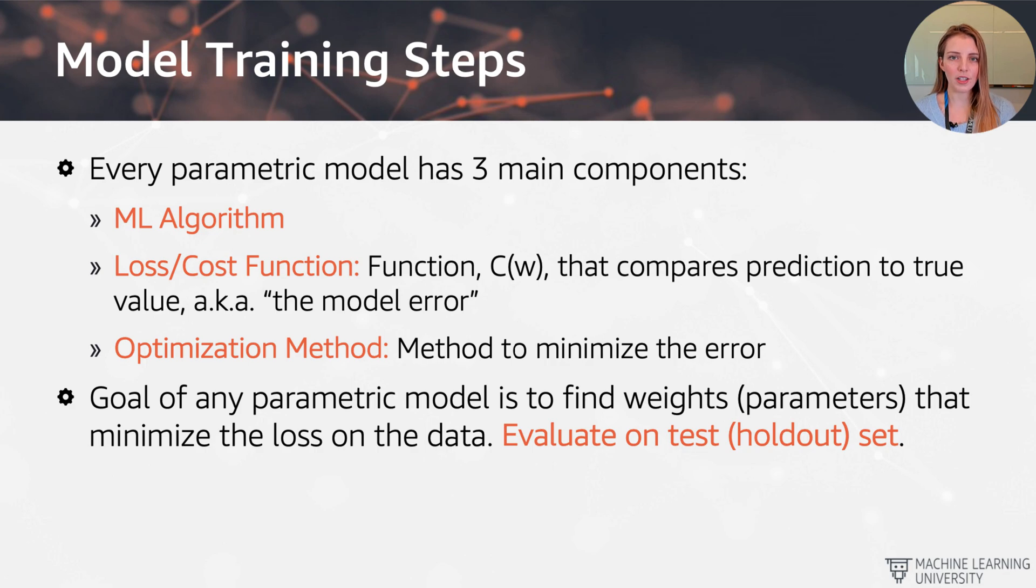The final ingredient now is going to be the optimization method, which is going to be a method that helps us minimize the error. So we're going to have some predictions and some true outcomes, and the optimization method is trying to help us to get the predictions as close as possible to the true outcomes.